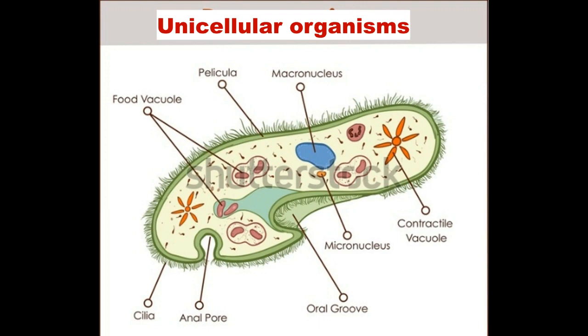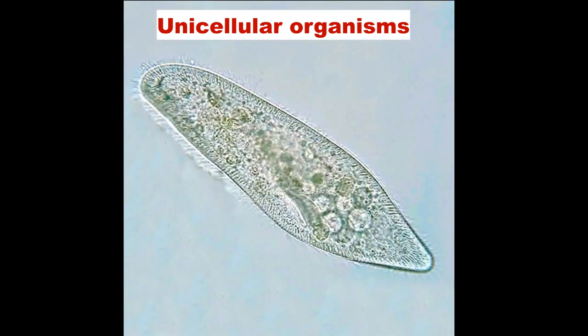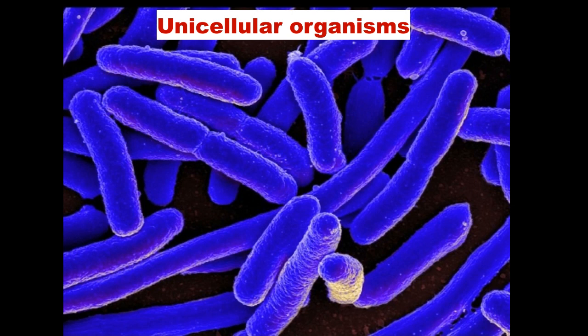We, for example, are called multicellular organisms. Unlike single-celled organisms where one cell performs all functions, multicellular organisms have many cells — and in single-celled organisms, all functions are done by that same single cell.